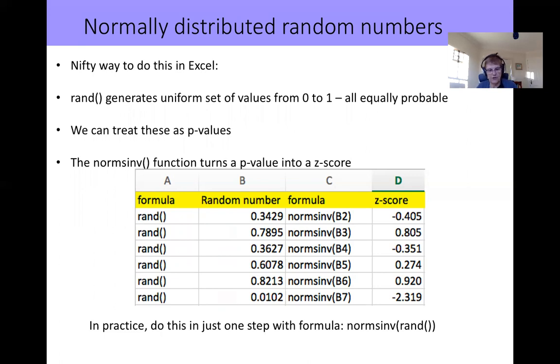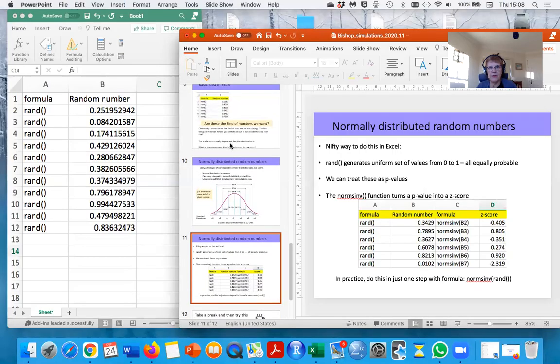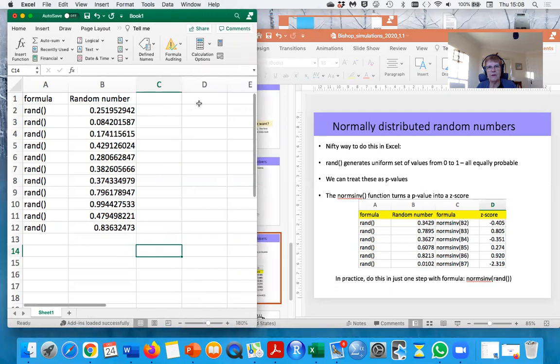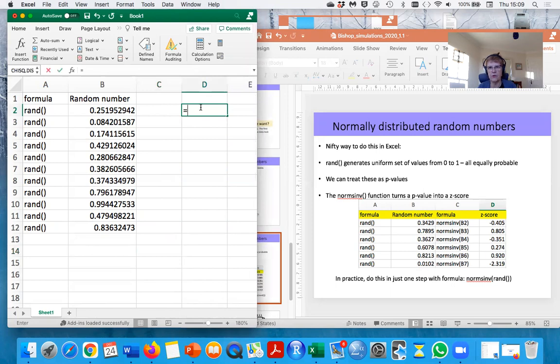So let me just come out of that and go back here. So here I've got my random number. If I now take the value, which is the normal inverse of that random number, we get a Z score. So I want to go here, this one, B2. So now you've got a negative number. And if I copy that formula down.